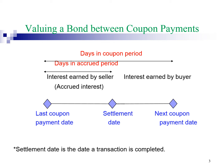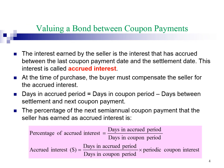Days in coupon period refers to the number of days between the two coupon payment dates. Days in accrual period is the number of days from the last coupon payment until the settlement date. Who is entitled to the interest accrued during the days in accrual period — buyer or seller? The answer is seller. The interest earned by the seller is the interest that has accrued between the last coupon payment date and the settlement date. This interest is called accrued interest.